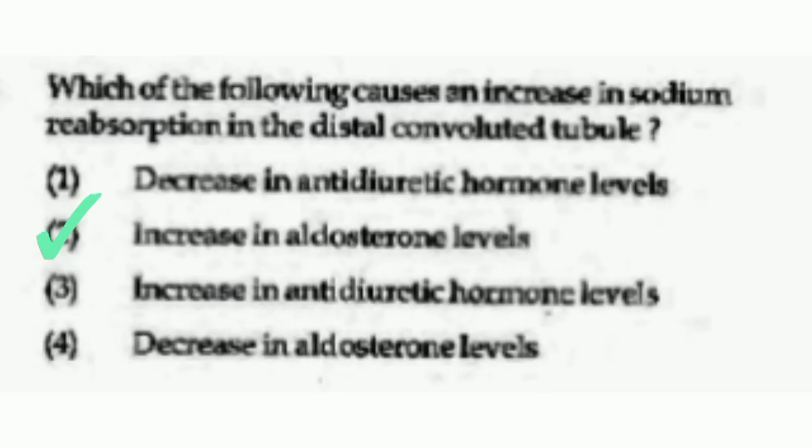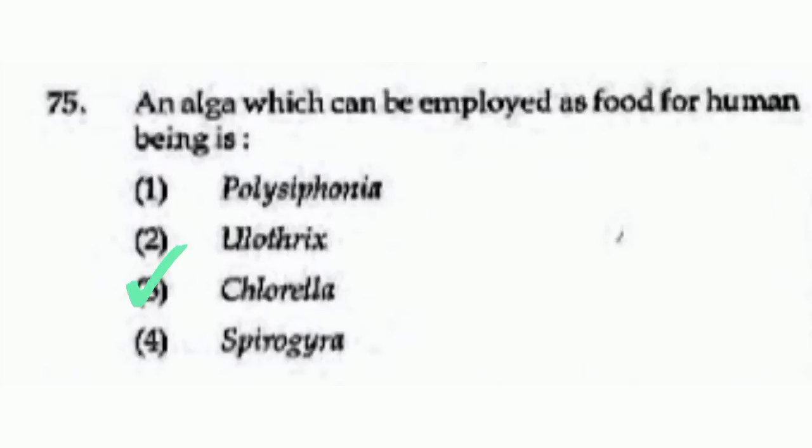An alga which can be employed as food for human beings is — options are Polysiphonia, Ulothrix, Chlorella, or Spirogyra. The correct answer is option number 3, Chlorella.